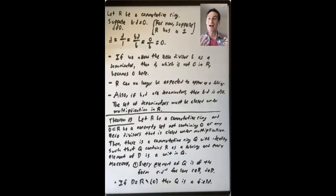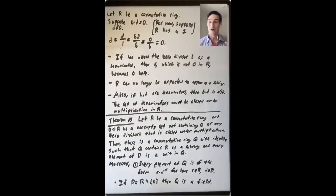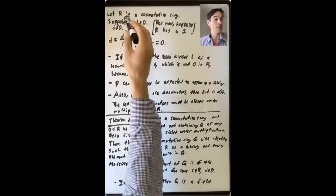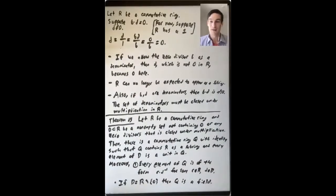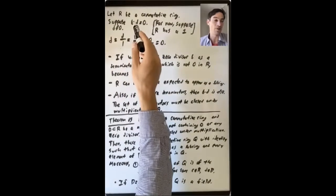One of the first difficulties we'll see is that if you try to do exactly the same thing — allowing equivalence classes of ordered pairs (a, b) where a and b are any elements in your ring — you have a problem when you allow b to be a zero divisor. Let's try to do the same construction where we start with a commutative ring R and find a bigger ring. Let's see what goes wrong.